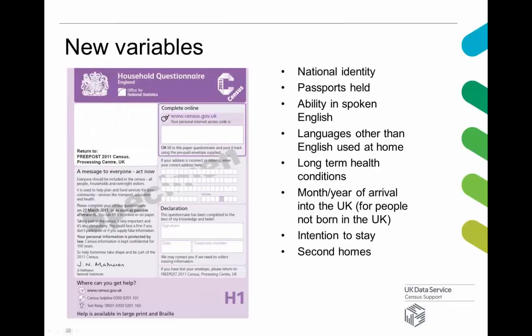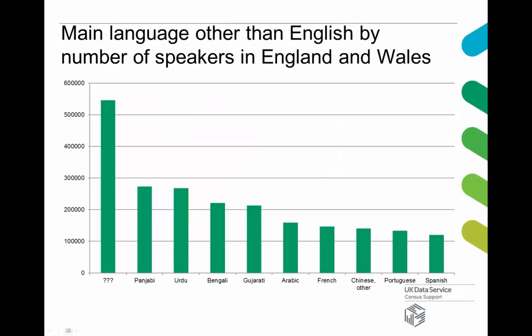Here's a screenshot from the 2011 census form. New questions this time around included national identity, passports held, the ability to speak English, languages other than English, month and year of arrival in the UK, intention to stay, and second homes. So that's what was new this time around.